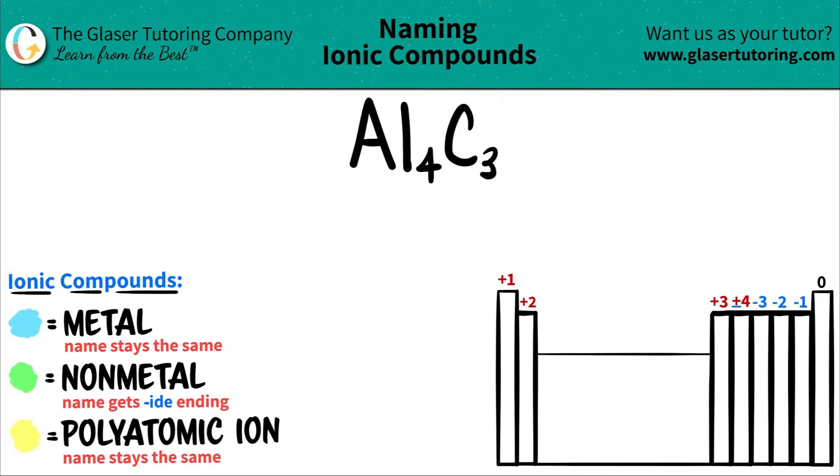Let's map them out on the periodic table. Aluminum is over here on the periodic table. It is a metal because it's to the left of the staircase. There's a staircase on the periodic table, and all elements to the left of that staircase are metals, except for hydrogen.